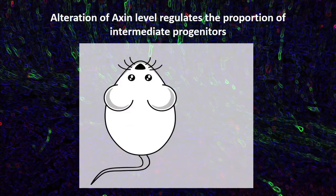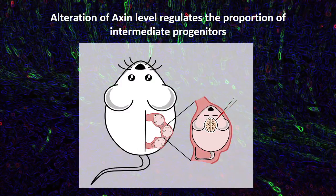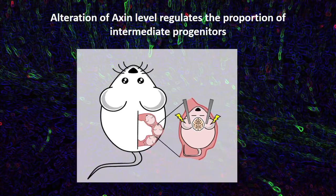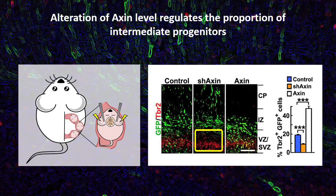Furthermore, we used in utero electroporation to elucidate axin's functions by specifically overexpressing or suppressing axin levels. Concordantly, increased axin protein levels enlarged the intermediate progenitor population. Meanwhile, loss of axin reduced the neuroprogenitor pools, causing precocious neurodifferentiation of progenitors.